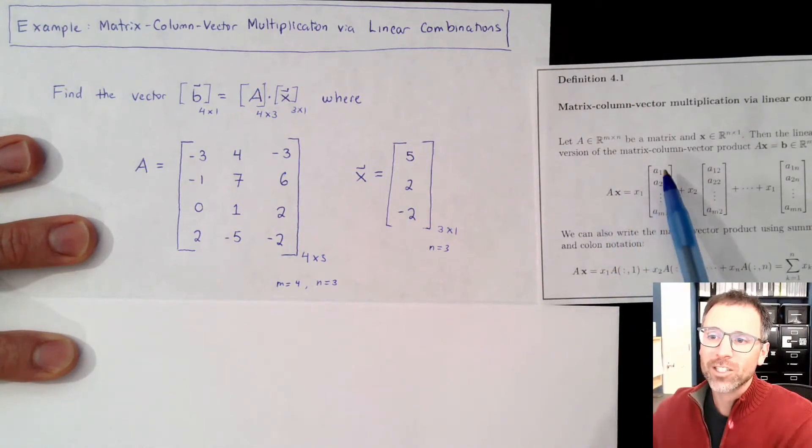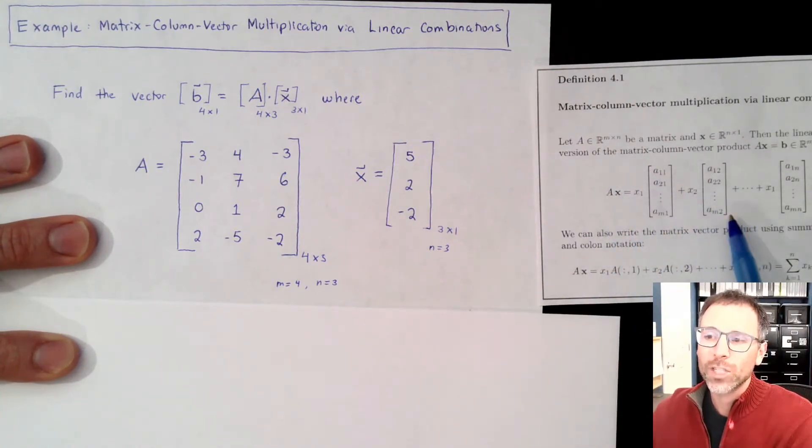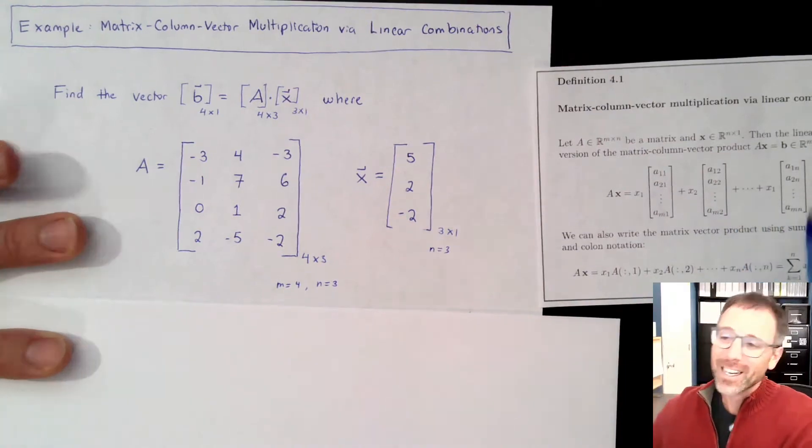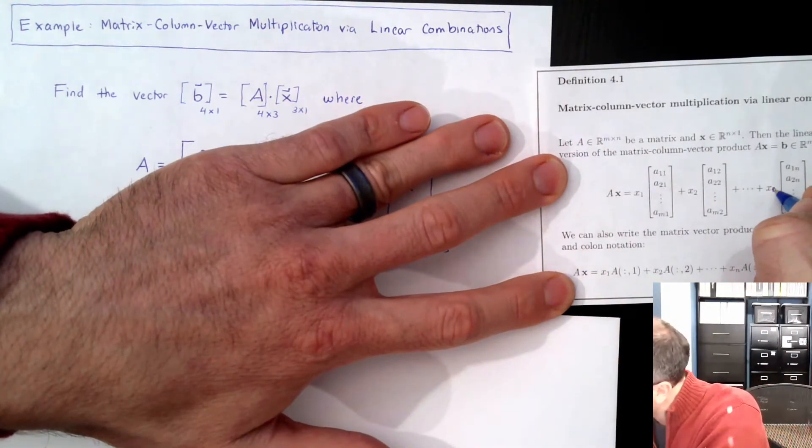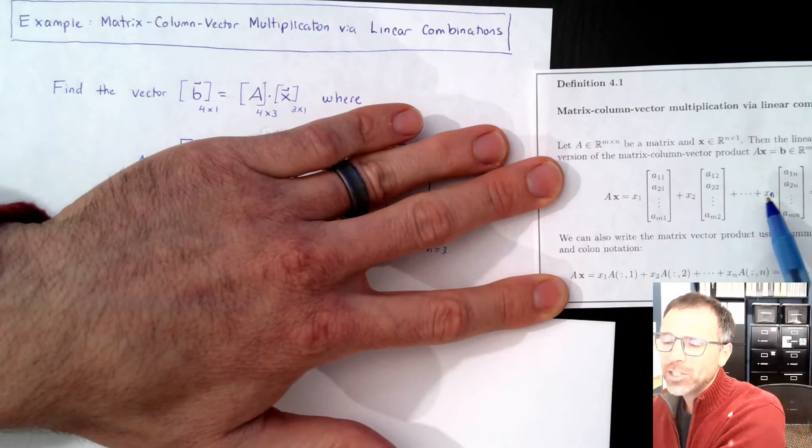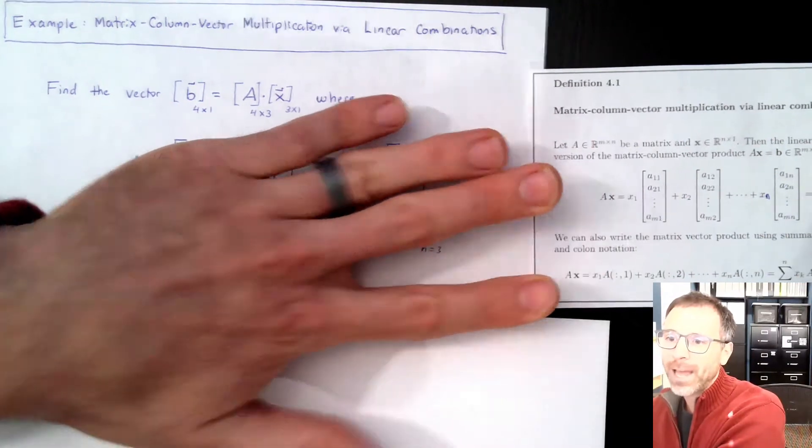The linear combination version of matrix multiplication is A times x equals x1 times the first column plus x2 times the second column plus da-da-da-da-da. Oh, and I need to fix this in my code, my LaTeX code. That should be xn times the nth column, and that's the vector b.